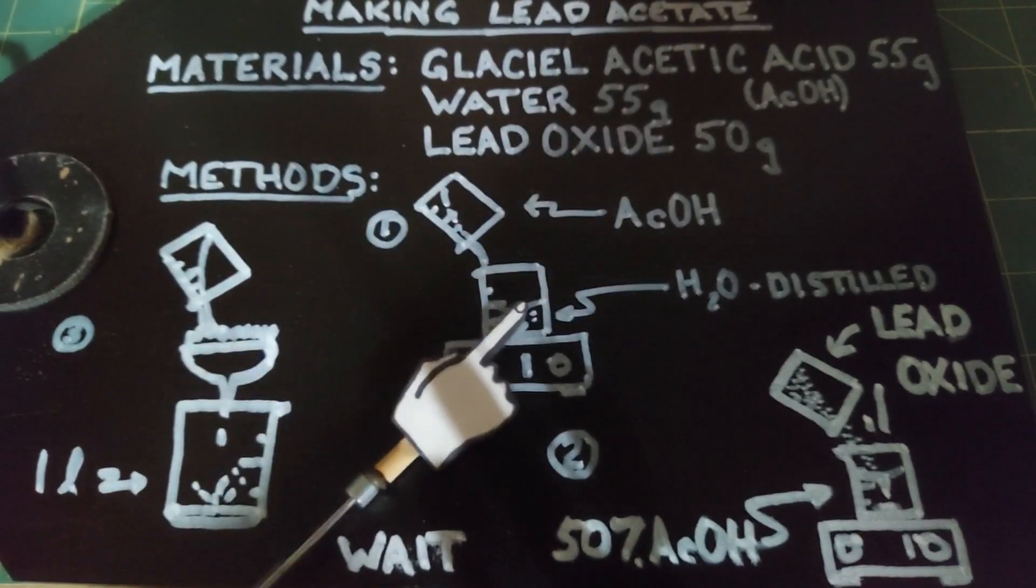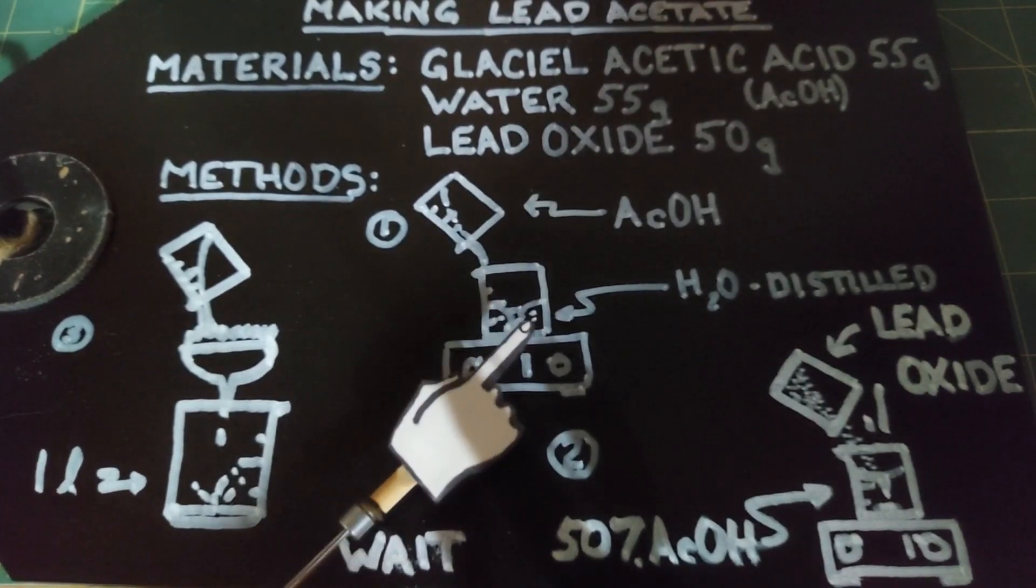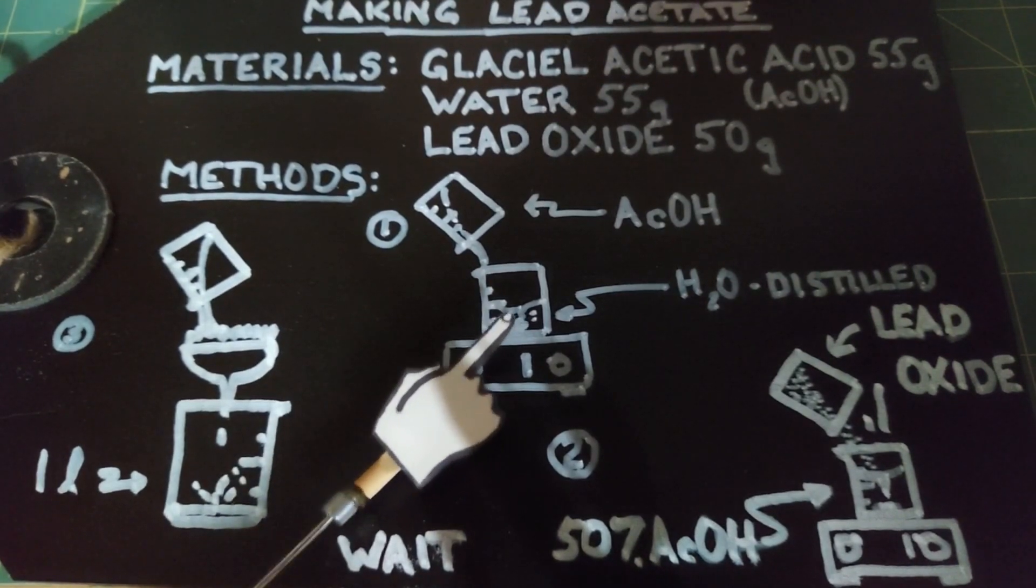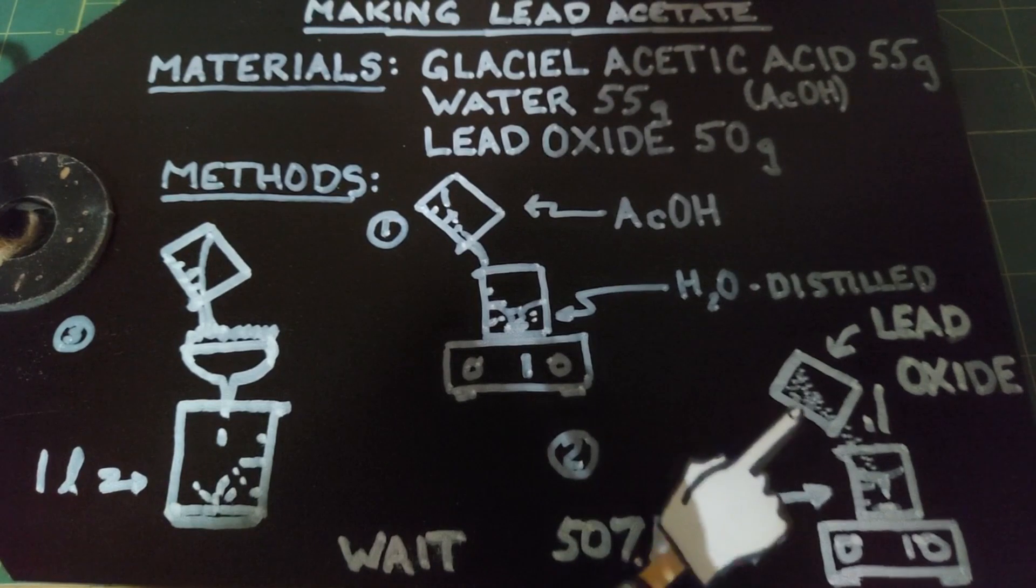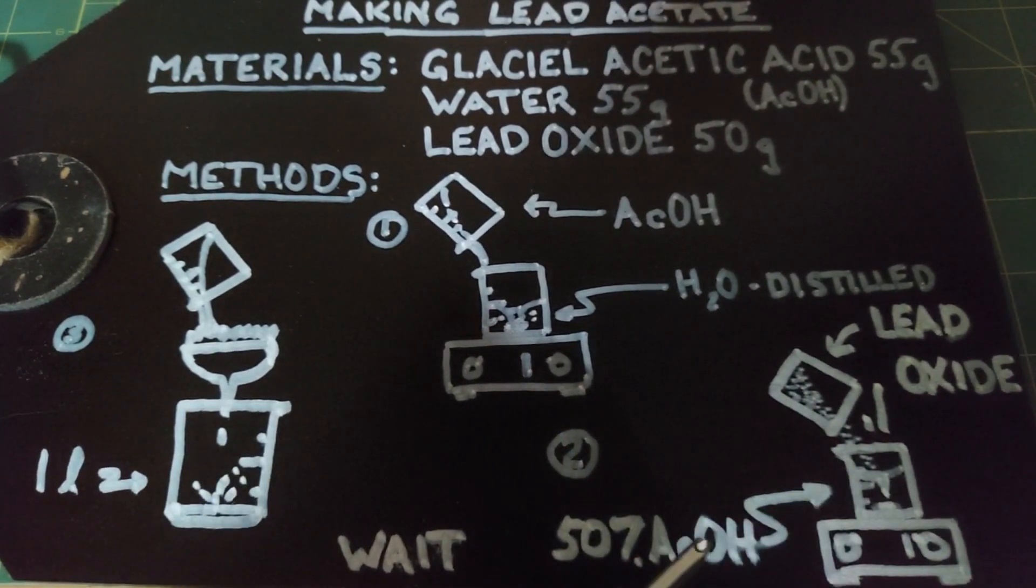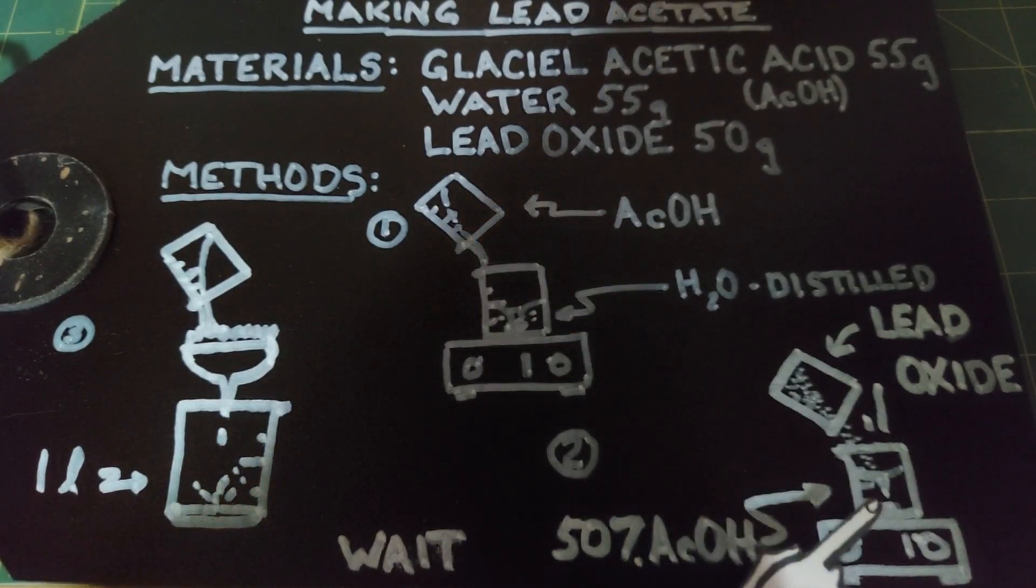For our methods, the first thing we do is put our water in a beaker. I use a stirring rod to accelerate the process of mixing and poured in the glacial acetic acid until it was mixed really well. Then I poured in the lead oxide slowly because this creates quite a bit of heat when the lead oxide goes in and continue to mix it in the 50% acetic acid solution until all the lead oxide was dissolved.